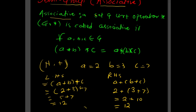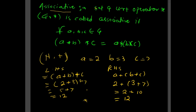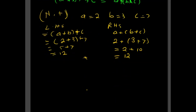Similarly, if you take the multiplication operator, it will also satisfy the associative property. However, division and subtraction are exceptions — they do not satisfy the associative property. You can take any examples of sets and check whether they satisfy the associative property or not.